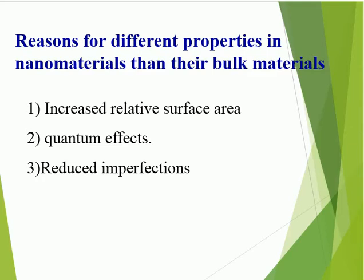Second reason: quantum effects. Nano materials have a special confinement effect which brings about quantum effects. Confinement means an atom can move from one place to another. In bulk material, which is in cubic form, atoms can move freely. But in nano materials, because the size is very small, atoms cannot move as freely. Due to this quantum effect, the energy band structure and charge carrier density can be modified, hence modifying electronic and optical properties. Examples are light emitting diodes and quantum dots.